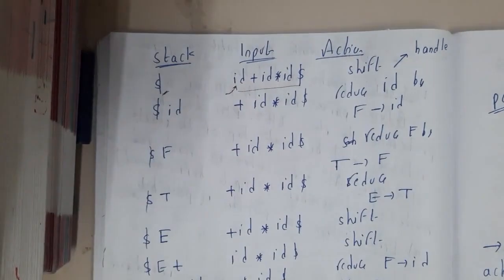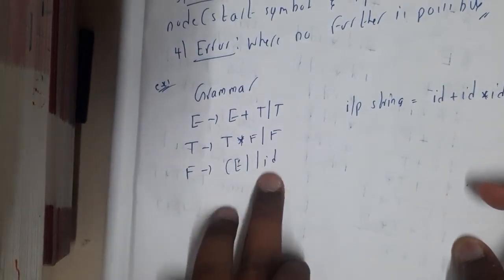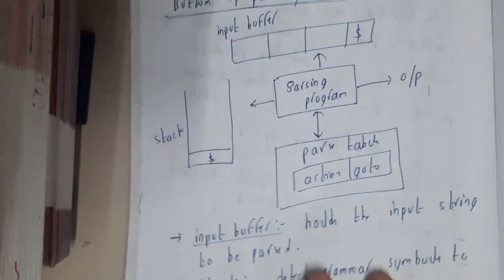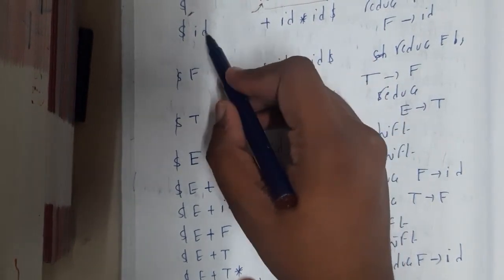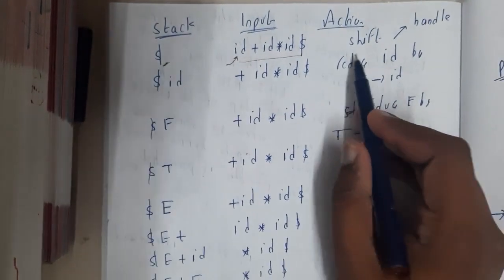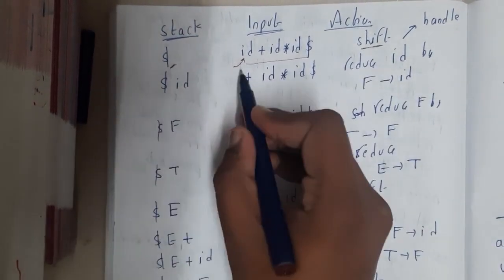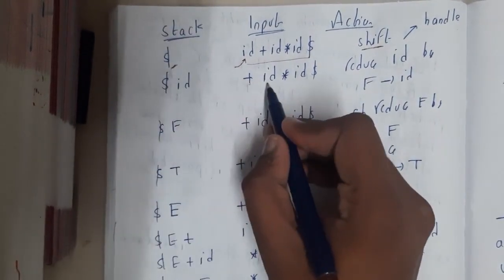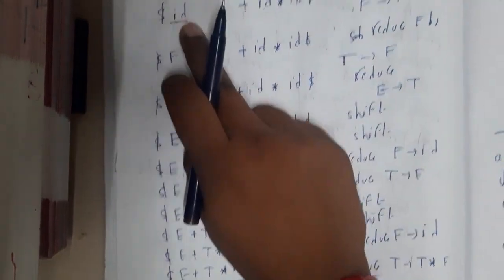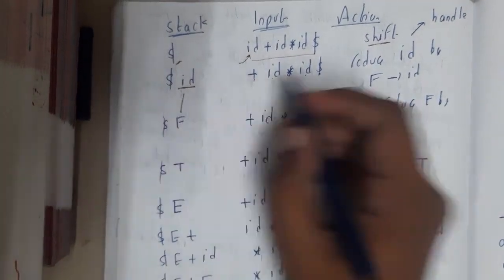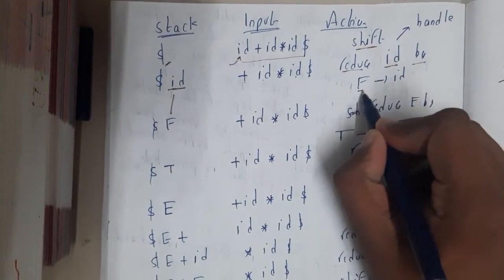The id will match only with F. To catch the handle, we first push id onto the stack — that is the shift operation. So now the stack has dollar-id and the remaining input is +id*id dollar. Since this id matches F → id, we can convert it to F. So id is reduced to F — that is reduce by F → id.